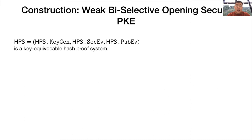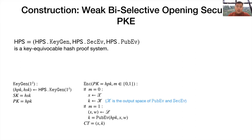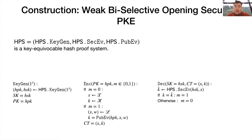We next see how to construct PKE schemes with weak biased-selective opening security from the K-equivocable hash proof system. The public key and secret key of the PKE scheme is just the public key and secret key of the hash proof system. The ciphertext contains an element from the set X and a string from the evaluation algorithm of the hash proof system. To encrypt message 0, the encryption algorithm outputs a random ciphertext in the ciphertext space. To encrypt message 1, the encryption algorithm samples an element from subset L and performs the public evaluation algorithm on that input. Then to decrypt a ciphertext Ct = (X, K), the decryption algorithm performs the secret evaluation algorithm on X and outputs 1 if and only if the result equals K.